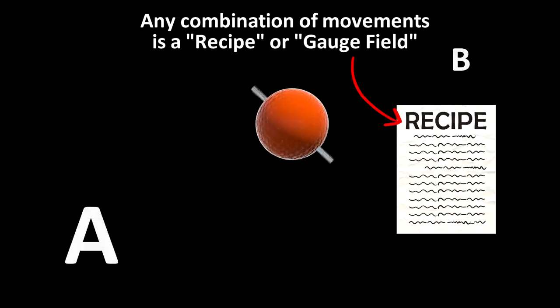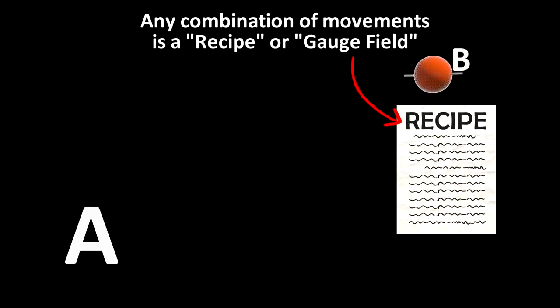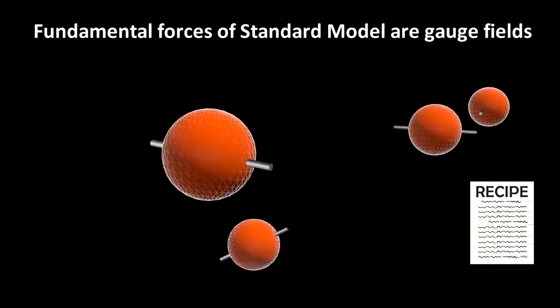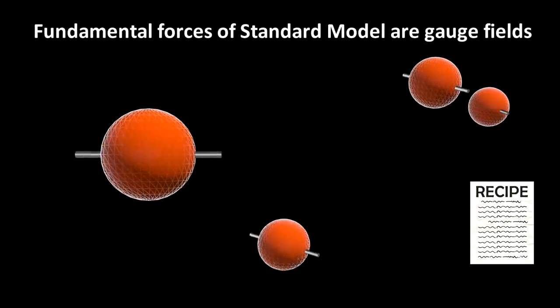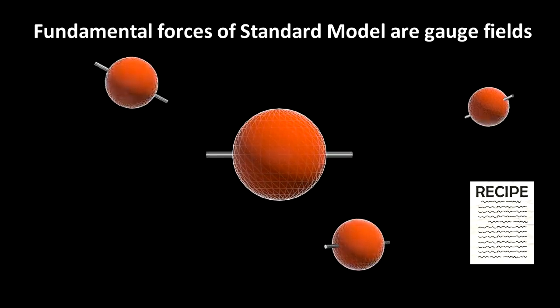A recipe for a combination of movements in physics is called a gauge field. A gauge field is a recipe of how to move one particle from point A to point B. Gauge fields are what make up the forces in the standard model. Since they are recipes of moving things around in space, they actually represent how things interact with each other, or how forces work.